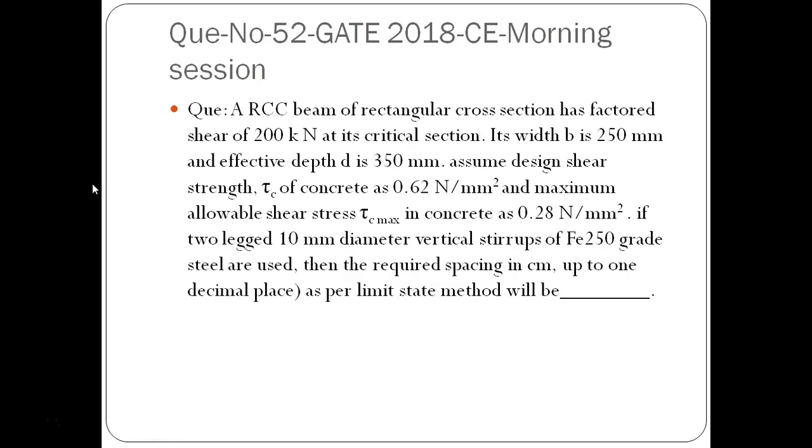Question is, an RCC beam of rectangular cross section has factored shear force of 200 kN. At its critical section, its width B is 250 mm and effective depth D is 350 mm. Assume design shear strength tau C of concrete as 0.62 N per mm square and maximum allowable shear stress tau C max in concrete as 0.28 N per mm square. If two-legged 10 mm diameter vertical stirrups of Fe250 grade steel are used, then the required spacing in centimeter up to 1 decimal place as per limit state method will be.